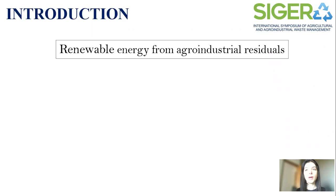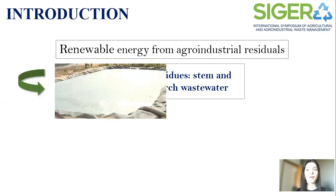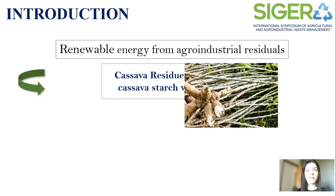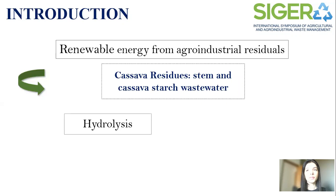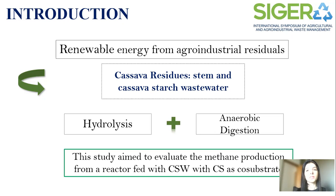Cassava is a common agriculture product in tropical countries, and this industry generates residues rich in carbohydrates, such as cassava starch wastewater, the CSW, and cassava stem, the CS, which have the potential to be used as energy source in anaerobic digestion.